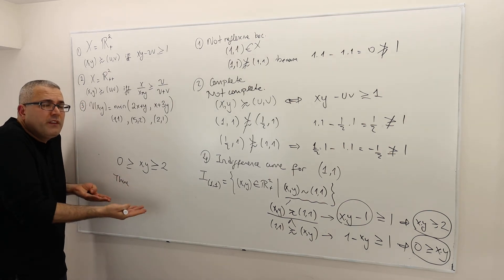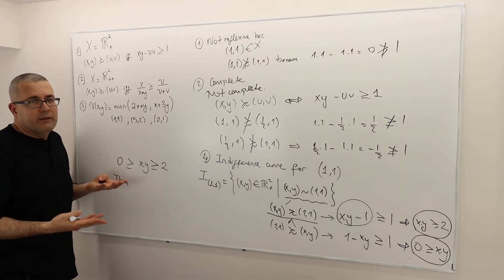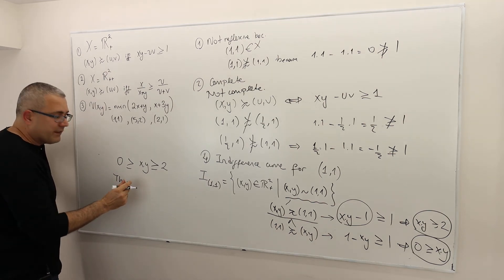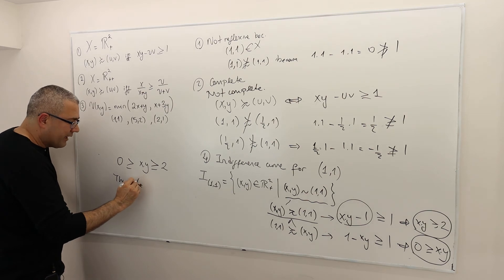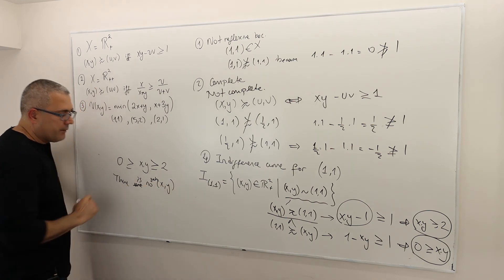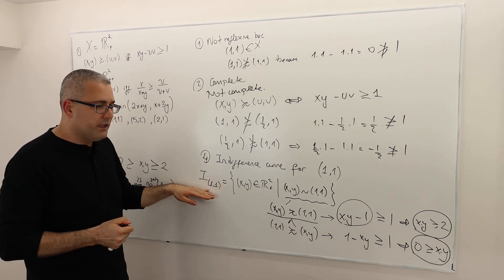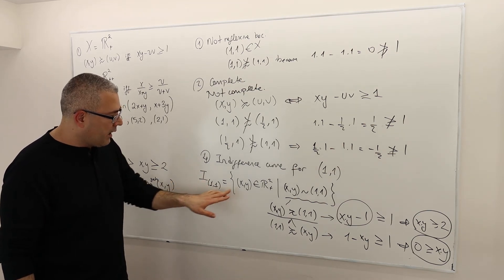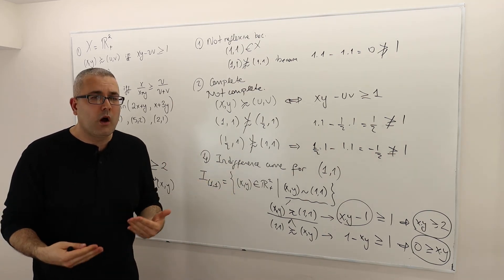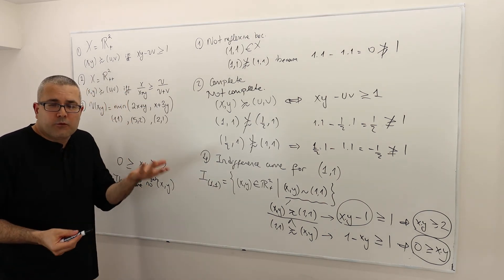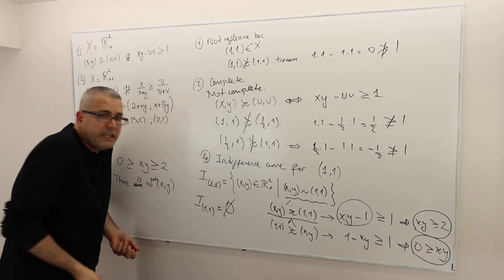We already know this from basic mathematics — you don't need to prove it. So there is no such (x, y). Going back to my definition: the indifference curve of (1, 1) is the set of (x, y) in R² plus such that (x, y) is indifferent to (1, 1). Since there is no such (x, y), the indifference curve set is empty.